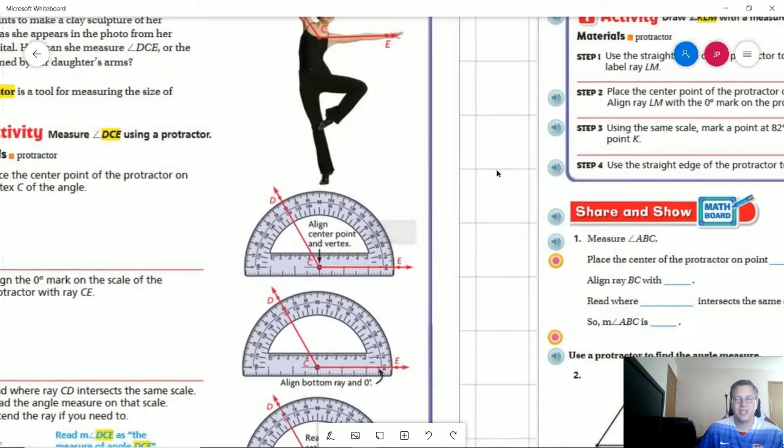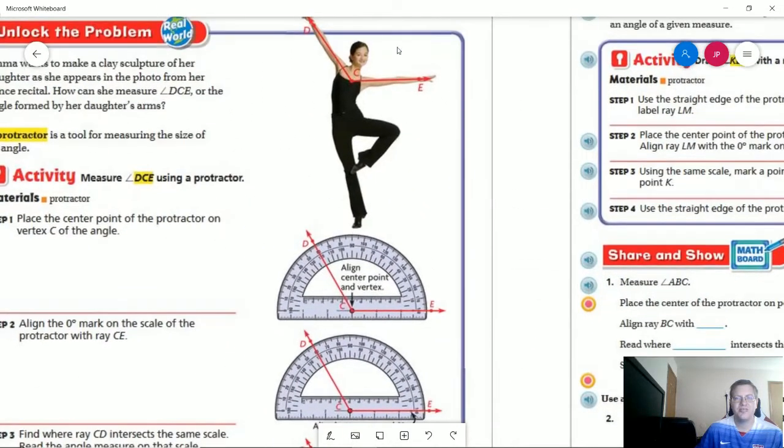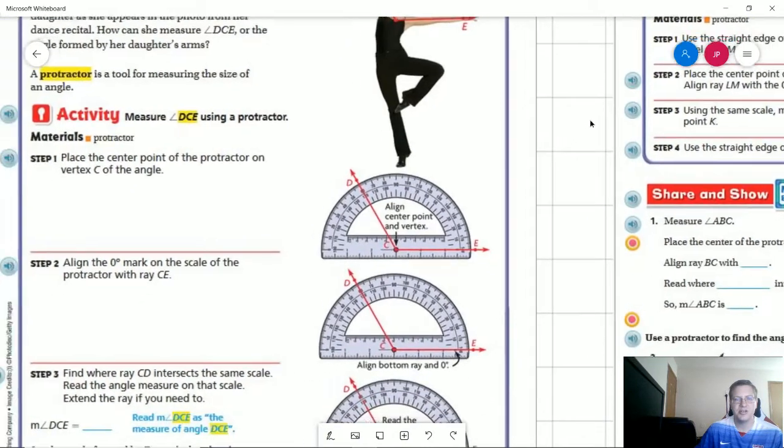So let's go ahead and take a look at our unlock the problem here. To start with, we are going to be working with a picture of a protractor that already has some lines on it and we're trying to figure out what the angle of this person's arms are.